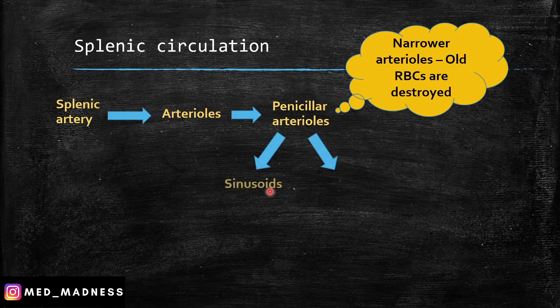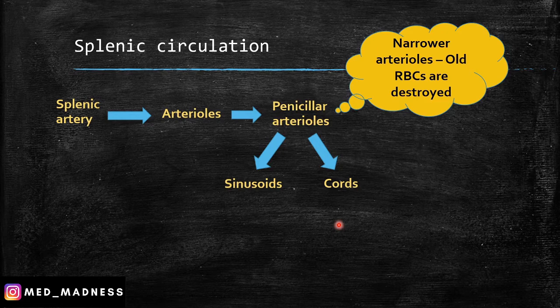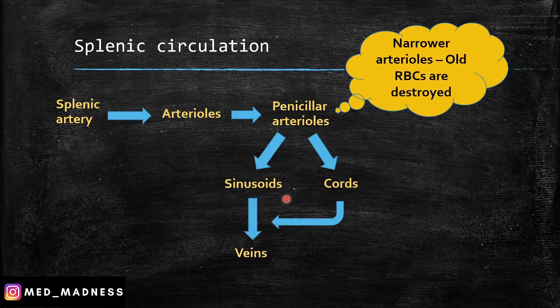Whereas the young RBCs — the membrane is very flexible and can adapt itself into these arterioles and comes out successfully without any damage. The blood from the penicillar arterioles goes through two pathways: one is through the sinusoids, which are the capillaries, and into the cords. In the cords you have a lot of macrophages, and in the sinusoids you have large gaps. The blood can move between the cords and sinusoids. The destroyed RBCs are engulfed by the macrophages and digested. Then blood from the cords moves through the sinusoids and through the veins — splenic vein and so on.